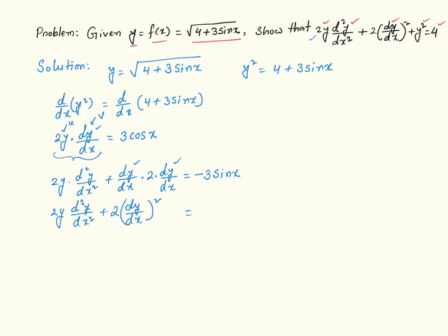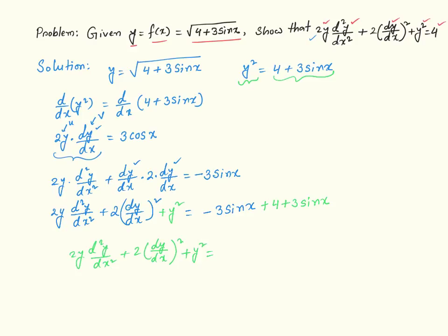Now I am going to add y square to both sides. However, on the right hand side, instead of adding y square directly, I substitute the equivalent expression 4 plus 3 sine of x. On the left hand side I have 2y times y double prime plus 2 times y prime squared plus y squared. On the right, negative 3 sine of x and positive 3 sine of x cancel out, leaving just 4. This is exactly what we were looking for — this is the final answer.